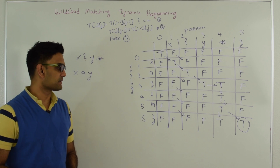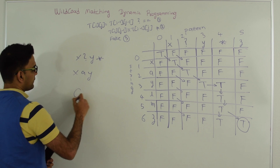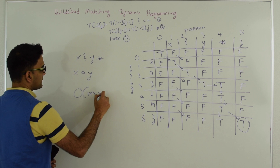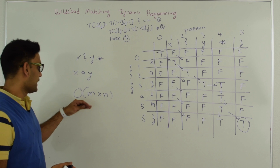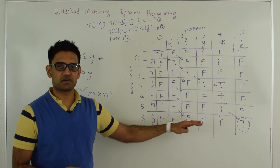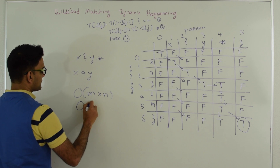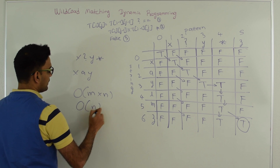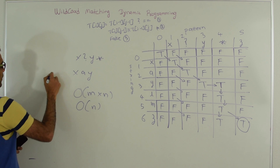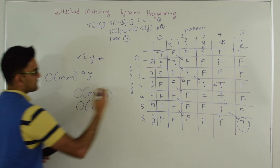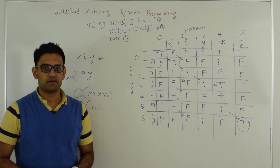Let's quickly talk about space and time complexity. The space complexity is O(M×N) where M is the length of the string and N is the length of the pattern, since we use a two-dimensional array. However, this could easily be done with a one-dimensional array, giving O(N) space. The time complexity is O(M×N) because that's how much time it takes to build the two-dimensional matrix.